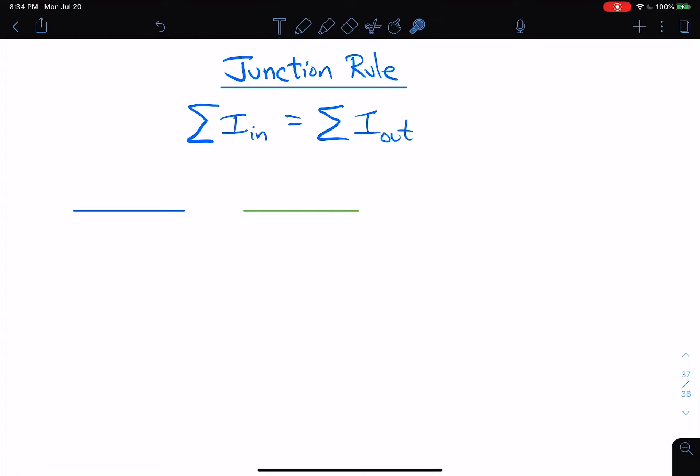The junction rule states that the total current entering a junction must equal the total current leaving a junction. As a formula, we write it as the sum of the current coming in has to equal the sum of the current going out.